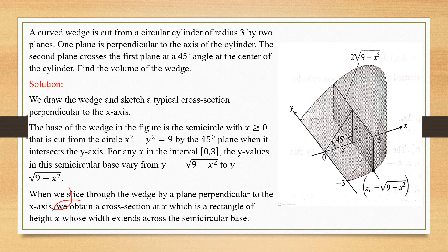When we slice through the wedge with a plane perpendicular to the x axis, we obtain a cross section at x which is a rectangle of height x, whose width extends across the semicircular base. You can observe from the diagram that a rectangle forms between the two planes inside the cylinder. The coordinate points of this wedge go from x, −√(9 − x²) to x, √(9 − x²), where x varies from 0 to 3.